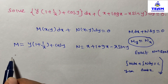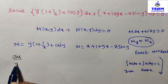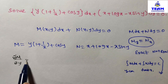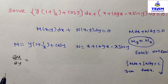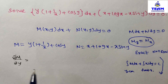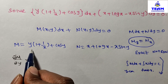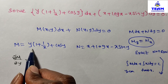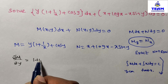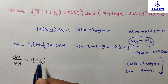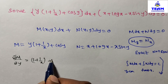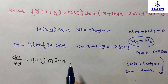Now differentiating M partially with respect to y — that is ∂M/∂y. Remember: when differentiating partially with respect to one variable, treat all other variables as constants. M contains two terms: y(1 + 1/x), where (1 + 1/x) is constant so the derivative gives (1 + 1/x), and the derivative of cos y is −sin y. So ∂M/∂y = (1 + 1/x) − sin y.